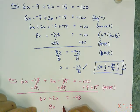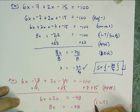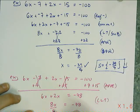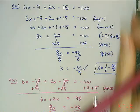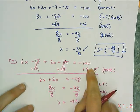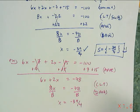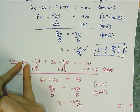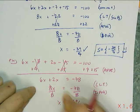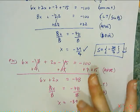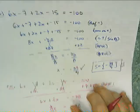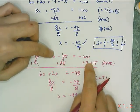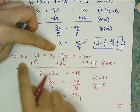6x plus 2x is 8x, which equals negative 78. Then divide both sides by 8 using the division property of equality, and I get the exact same answer. The difference is I used strategic addition or subtraction first to avoid needing the definition of subtraction and the commutative property. This shortcut only works when there are no parentheses and the only operations between terms are addition and subtraction — not when multiplication is involved.